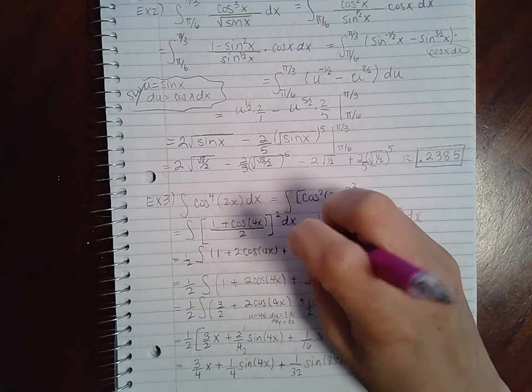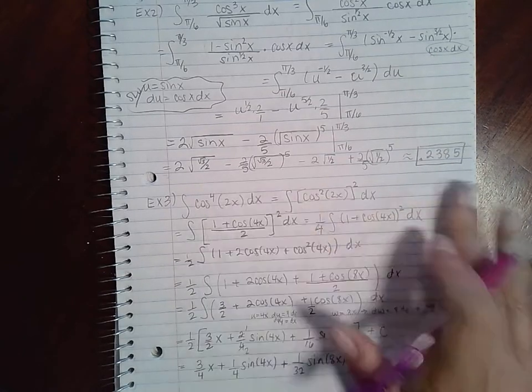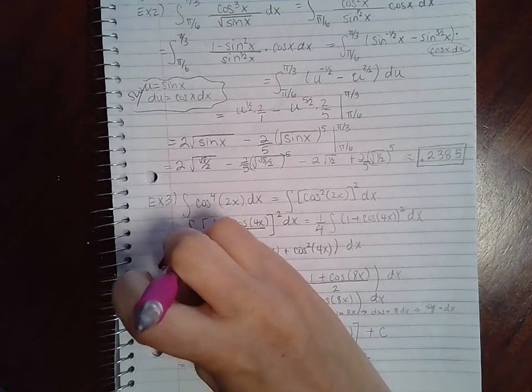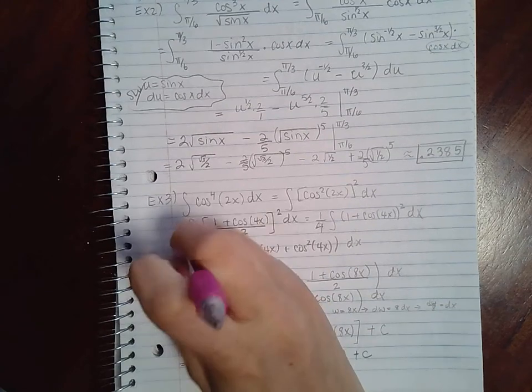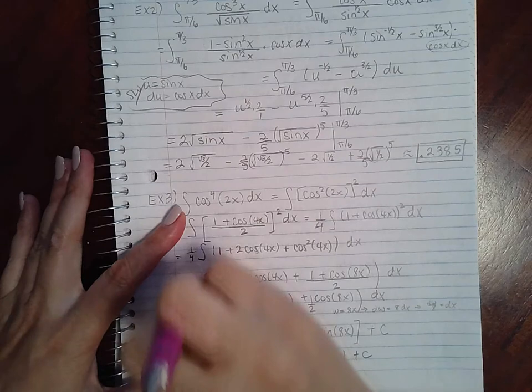So this one half should have actually been a one fourth. And it's a good thing we took it out. That way it's not messing with anything else that we have in the problem up until the very end when we decided to distribute it back.